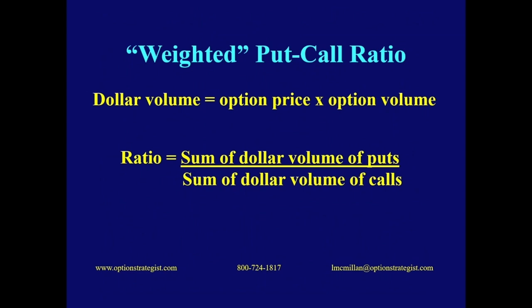The weighted put-call ratio came along once computers got involved, allowing many calculations to be done quickly. What we're measuring here is the dollars being spent on these options, not just how many contracts are trading. We take the volume of the option and multiply it by its price. Real-time trade-by-trade data is expensive and ties up a lot of computing power, so we determined that we can use the options' closing price multiplied by the volume that traded the entire day, and still get a very good measure of dollar volume. At end of day, we make that calculation for every option on every stock and futures contract, sum up all the puts separately from all the calls, divide the two, and that gives us the dollar-weighted put-call ratio.